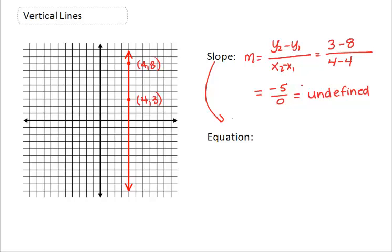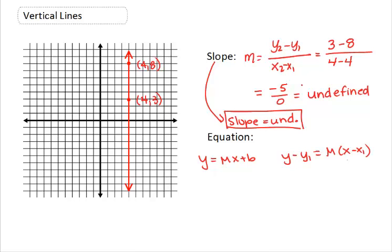So the slope of all vertical lines is undefined, which we usually just abbreviate UND. Now if we were trying to come up with the equation for this one, even if we knew either one of our formulas here, it doesn't really help us much. Because if I have to plug in undefined for my m value in either equation, I would have to stop there. Because I cannot simplify, I cannot multiply or divide or add or subtract anything by undefined. It just doesn't make any sense.